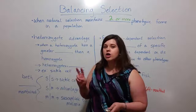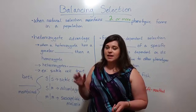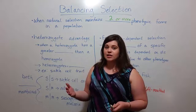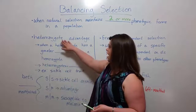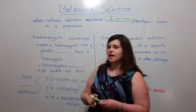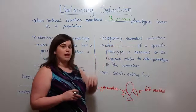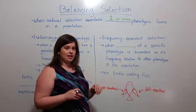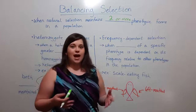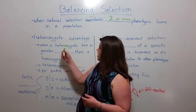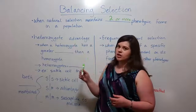There are two different mechanisms that can lead to balancing selection: heterozygote advantage and frequency-dependent selection. Let's talk about what each of these are and look at an example of each.